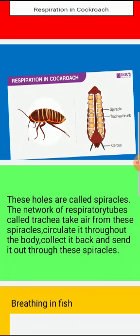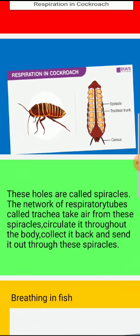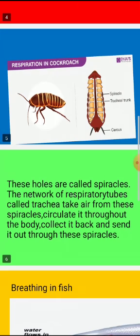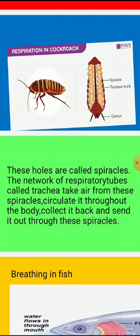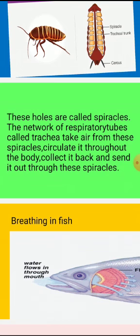The trachea takes air from the spiracles, circulates it throughout the body, collects it back, and sends it out through the spiracles. So the cockroach breathes with the help of spiracles and trachea. Spiracles are the small holes present on the sides of its body, and the tube-like structures present in the body are called trachea.